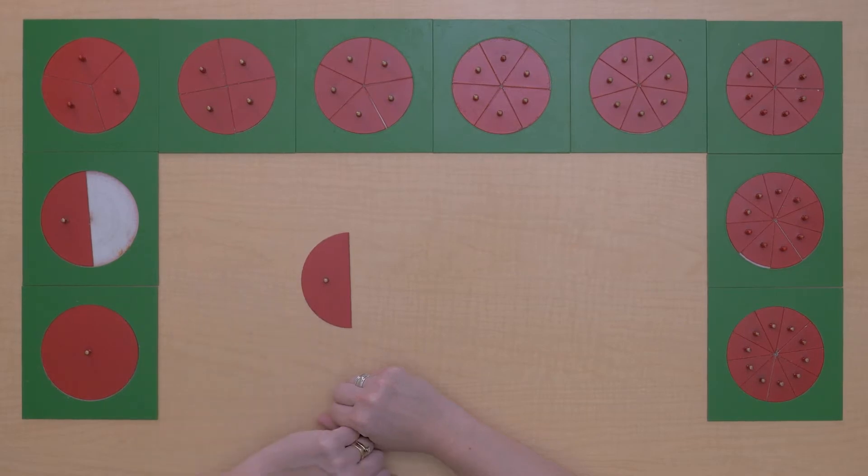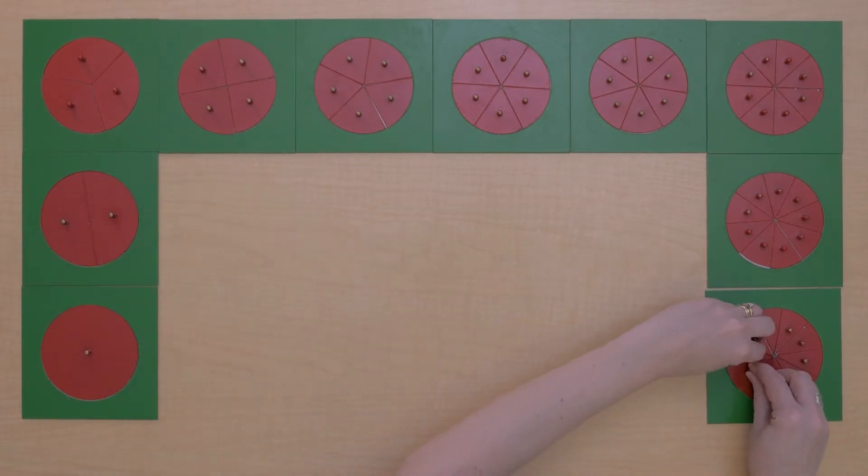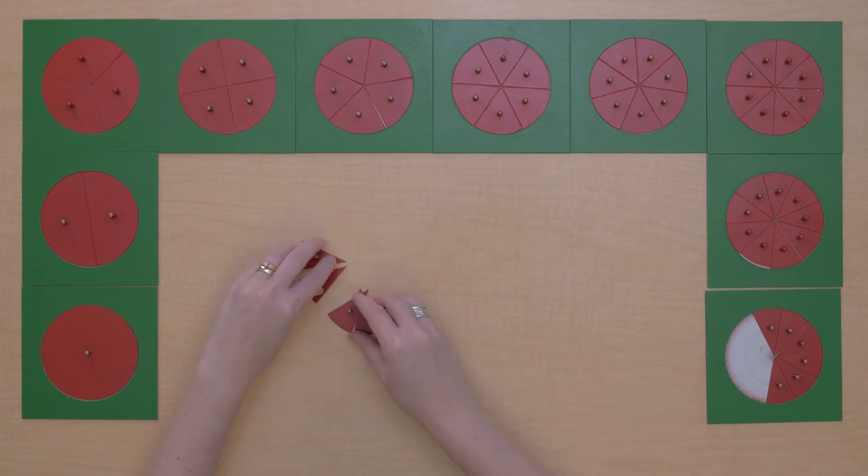Is there an equivalent fraction for tenths that would equal 1 half? In fact, there is. We know it's 5 tenths. So let's turn that 1 half into 5 tenths.